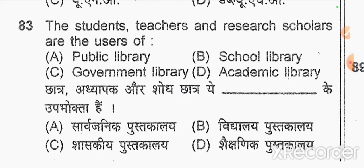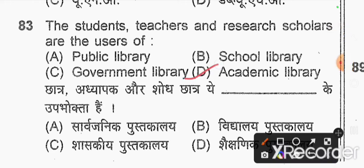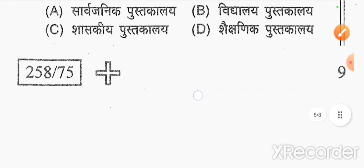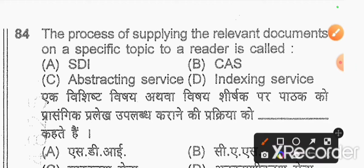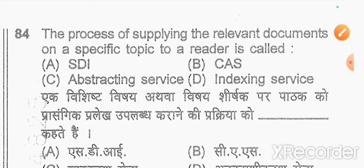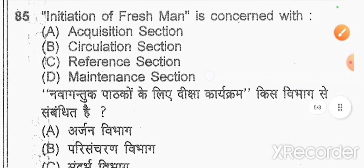In 1927 — option D — academic library. Question 84: the process of supplying relevant documents on a specific topic to a reader is called — option A — SDI. Question 85: initiation of freshmen is concerned with — option C — reference section.